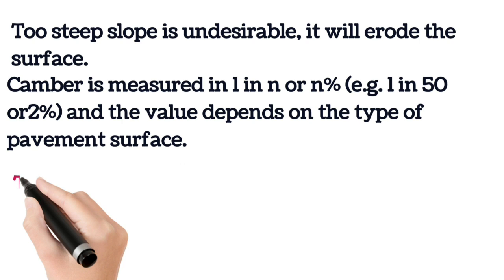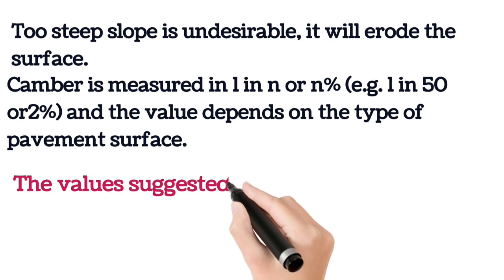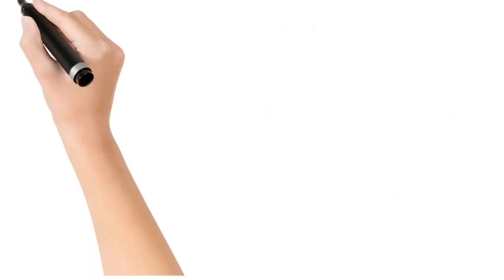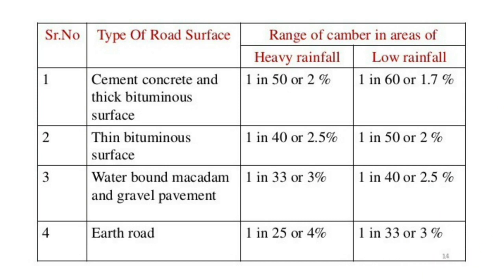Camber is measured as 1 in n or as a percentage. For example, if camber is 1 in 50, then in percentage it is 1/50 × 100 = 2%. The value depends upon the type of pavement surface. The IRC provides values for various categories of pavement in a table with three columns: type of road surface, and range of camber divided into heavy rainfall area and low rainfall area.